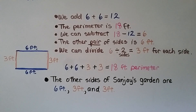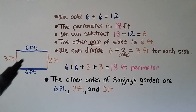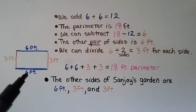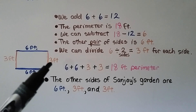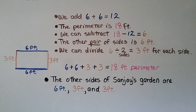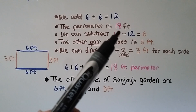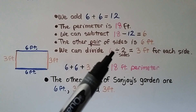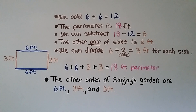So the sides of Sanjay's garden are 6 feet, 6 feet, 3 feet, and 3 feet. The problem gave us the first 6-foot side, and we found the other sides are 6 feet, 3 feet, and 3 feet. We used addition, then subtraction, then division to solve this problem.